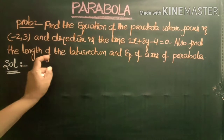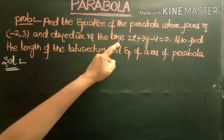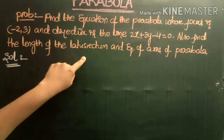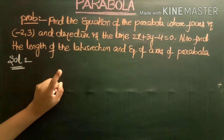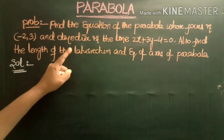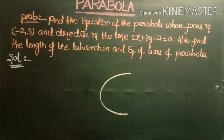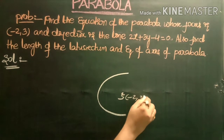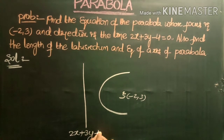Next problem: Find the equation of the parabola whose focus is (-2, 3) and the directrix is the line 2x + 3y - 4 = 0. Also find the length of the latus rectum and equation of the axis of the parabola. Given: focus = (-2, 3) and directrix: 2x + 3y - 4 = 0.